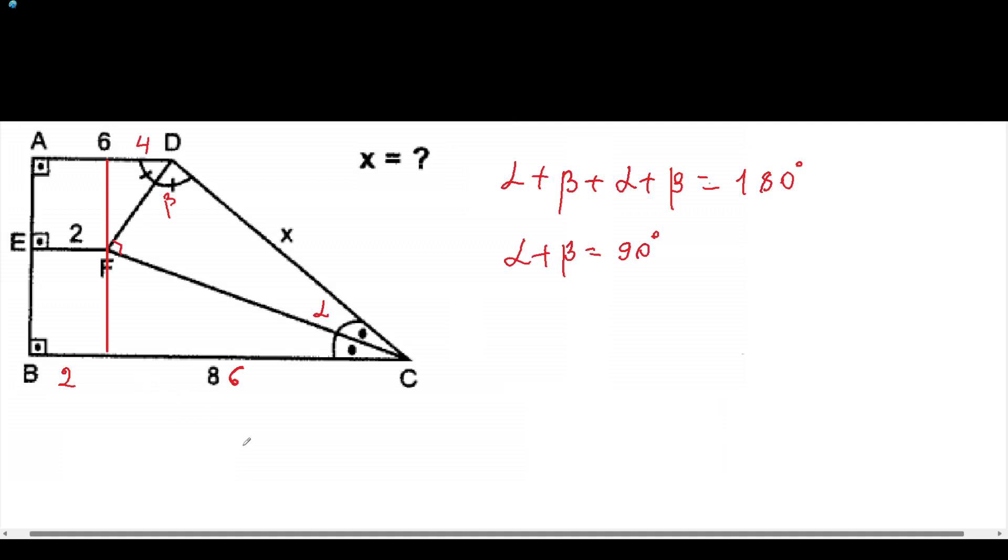Now we can find out the cosine alpha here and cosine beta. From the two triangles, from the triangle FDC, the cosine alpha will be equal to FC over x. And from the triangle FIC, we can also find out the cosine alpha and it will be equal to 6 over x times FC. And the cosine beta will be equal to FD over x will be equal to 4 over FD.